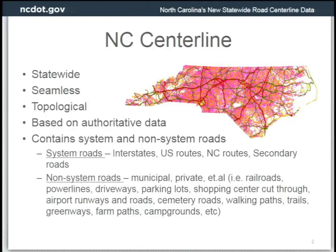The data is statewide, spanning the entire state, and also seamless — edge-matched at jurisdictional boundaries. It's topological in that where it's edge-matched, those lines are snapped together so you don't have overshoots and dangles. The data is based on authoritative data: the Department of Transportation is responsible for what we call system roads, and local government jurisdictions are responsible for non-system roads. Prior to 2015, the statewide centerline was comprised of only system roads — interstates, U.S. routes, and secondary roads. The majority of roads in our state are secondary roads.